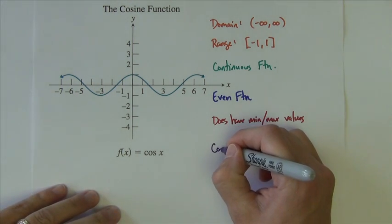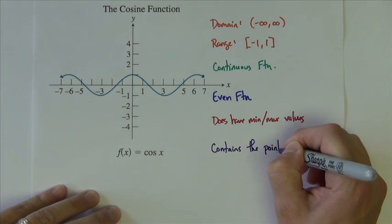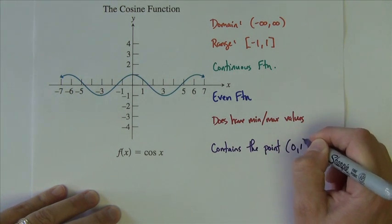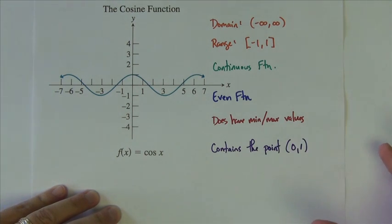And it does, just to kind of distinguish it, it contains the point (0,1). Or we could say it doesn't contain the origin.